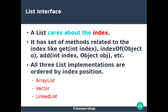All three list implementations are ordered by index position. We have the list in three categories: ArrayList, Vector, and LinkedList. All three are ordered collections by their index position. Let us talk about these one by one.